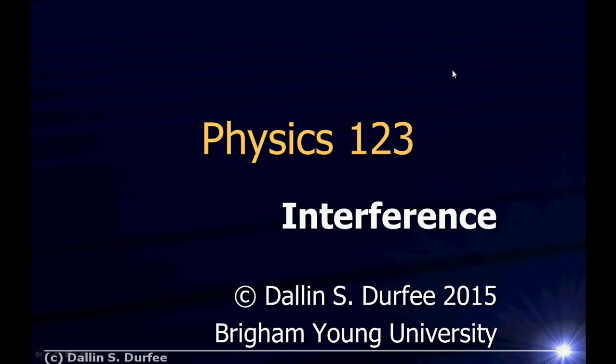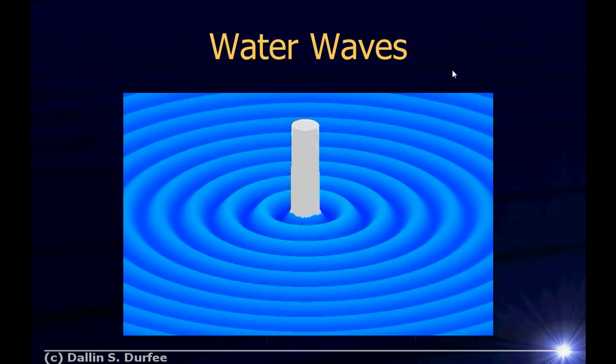Okay, cue the theme music. We all live in a yellow submarine, a yellow submarine. Okay, today we're going to talk about interference. We've been talking about ray optics and now we're going to start considering what happens when we remember that light is actually a wave. So we're going to do a little review of the idea of interference. We've dealt with it when we did the unit on waves.